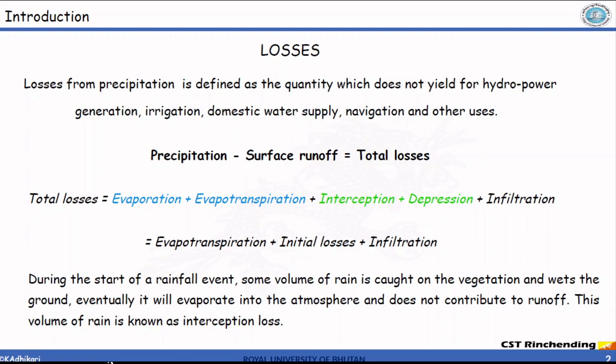There are two new terms here: interception and depression. During the start of a rainfall event, some volume of rain is caught on the vegetation and wets the ground. Eventually it evaporates into the atmosphere and does not contribute to runoff — this volume is known as interception losses. Some portion of rainfall is used to fill water in the catchments; eventually it will infiltrate or evaporate, and thus does not contribute to runoff.